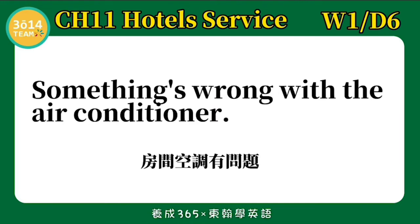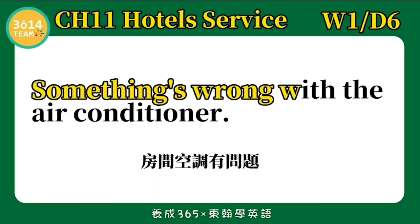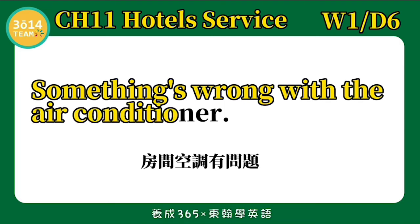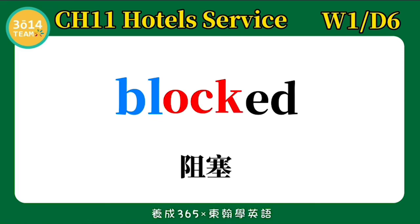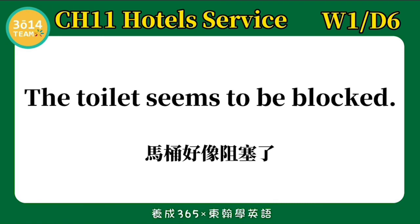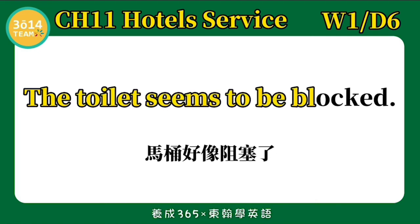Something's wrong with the air conditioner. 房间空调有问题。跟着我念一次：Something's wrong with the air conditioner. Blocked 阻塞。BL 我们念 BLOCK，OCK 念 ARK，ED 放在 K 的后面，我们会发 T 的音：BLOCKED. The toilet seems to be blocked. 马桶好像阻塞了。跟着我念一次：The toilet seems to be blocked.